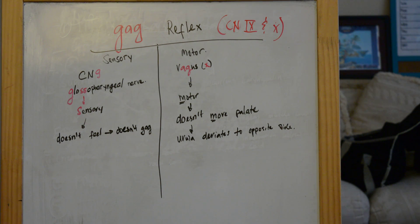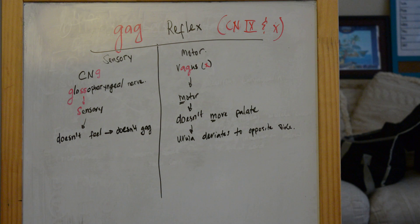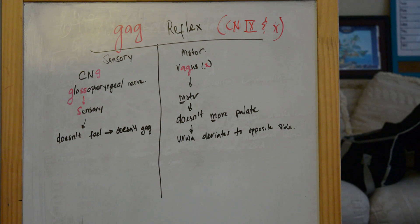When there is a lesion to cranial nerve 9, the patient no longer senses touch to the posterior side of the throat. If the patient can't sense it, that information won't be relayed to the vagus nerve, which is the motor nerve responsible for causing the gag reflex to elevate the uvula and soft palate. So with a cranial nerve 9 lesion, the patient won't have a gag reflex — they don't feel it and they don't gag.